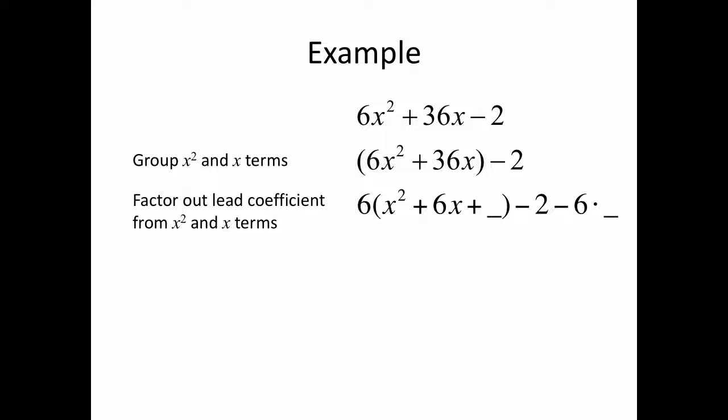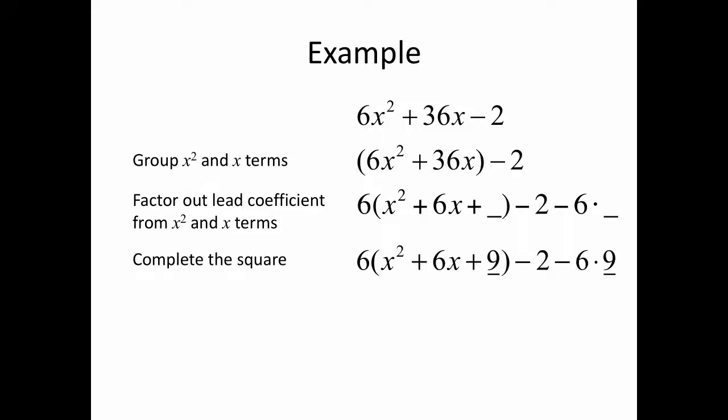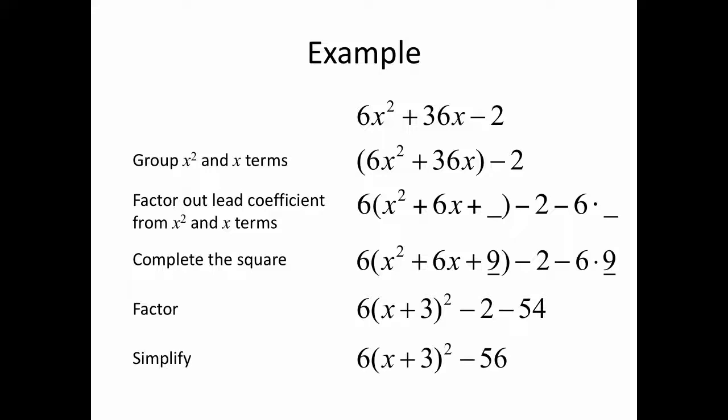When we subtract what's in that empty space, we have to subtract 6 copies of it, because that's how many squares we're completing. We complete the square inside with 9 — that's half of 6, squared. On the outside, we subtract 6 times 9, or 54. We then factor and simplify to get our result.